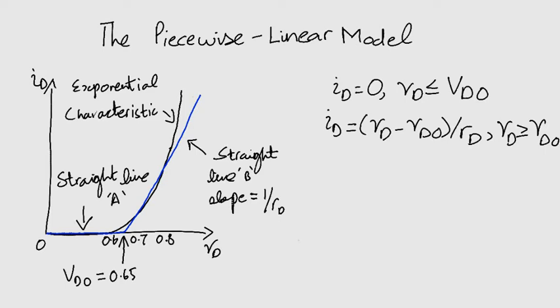The second equation is derived by a simple modification of y equals mx plus c, the equation of a straight line with a y-intercept. Try it yourself.